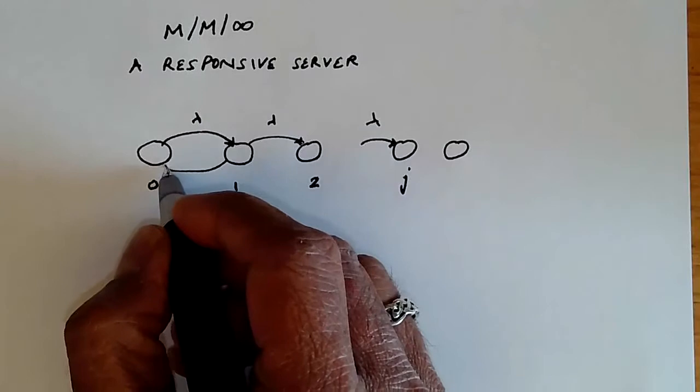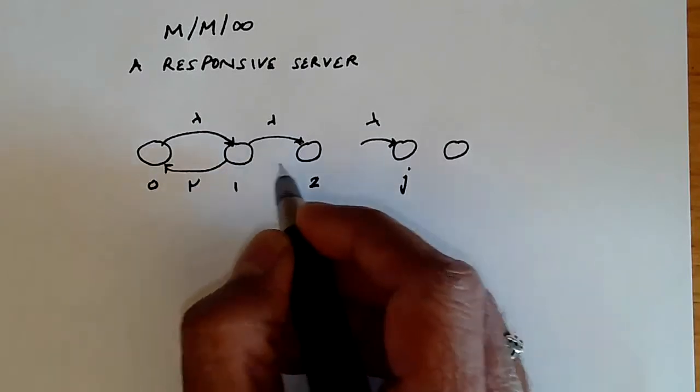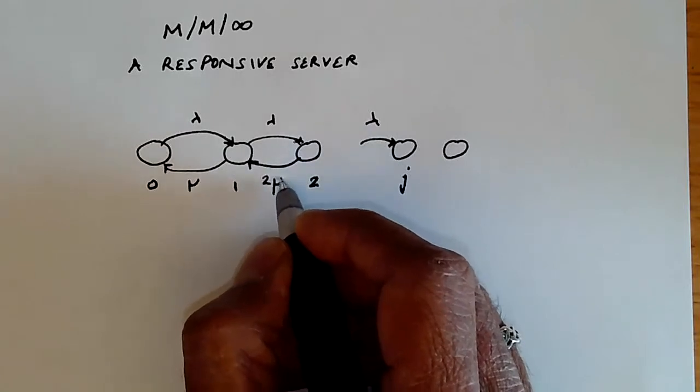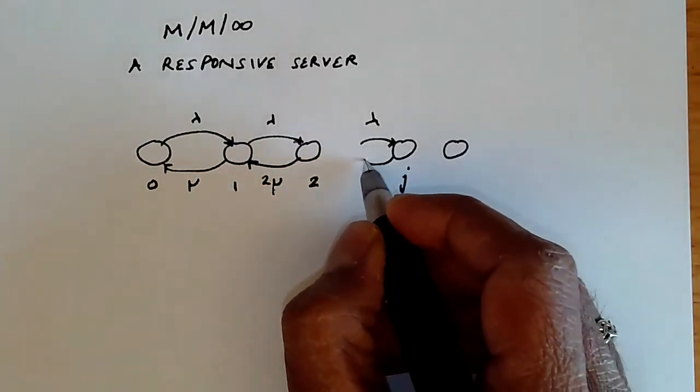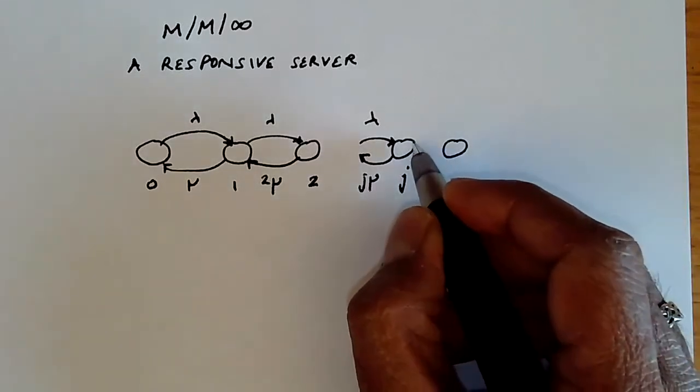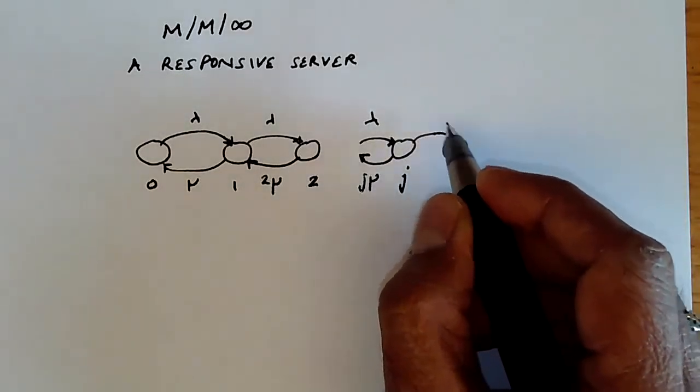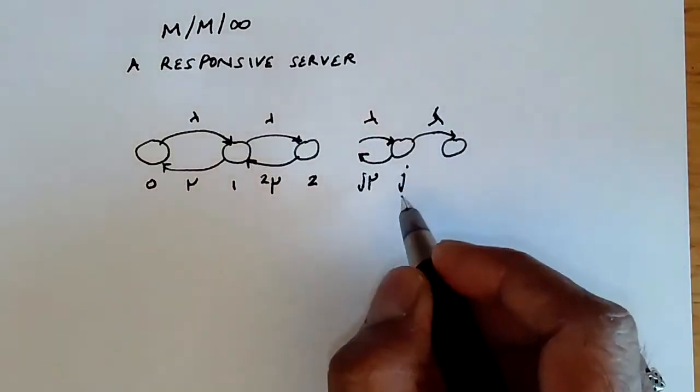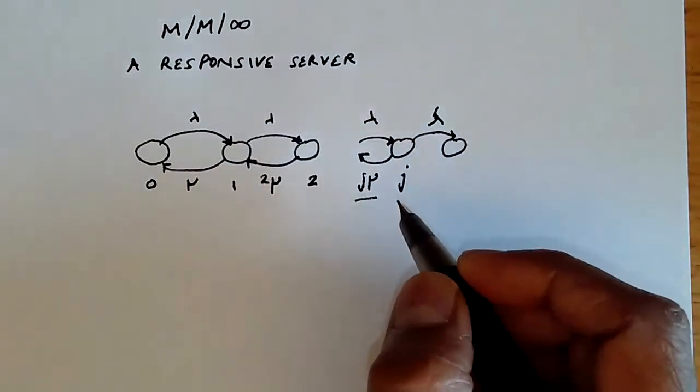And then the departure, however, is going to be mu when we're in state 1. And over here it's going to be the state rate 2 mu because you have two servers. And in general we're going to have j mu as the departure rate from state j. The arrival rate is going to be lambda, but the departure rate is going to be j mu over here.